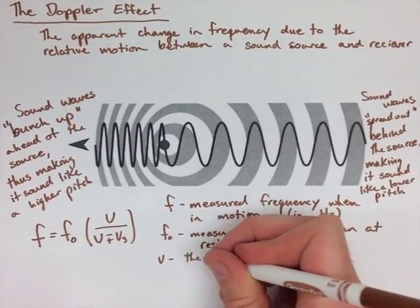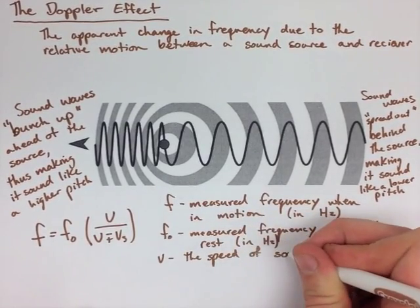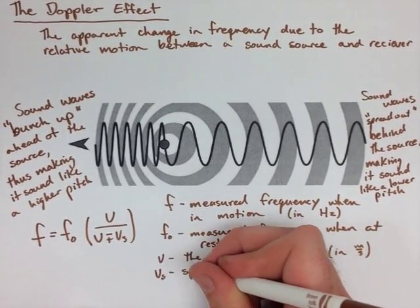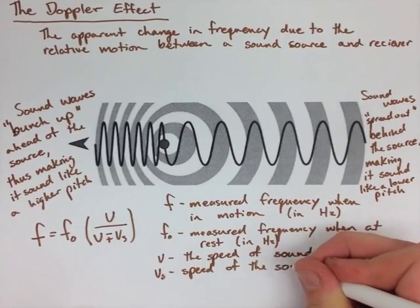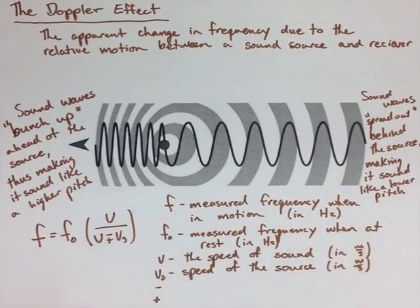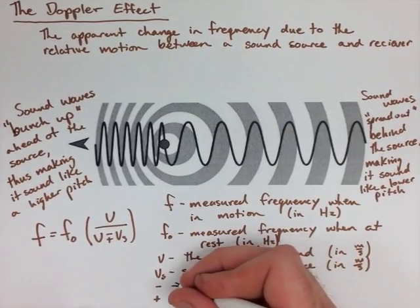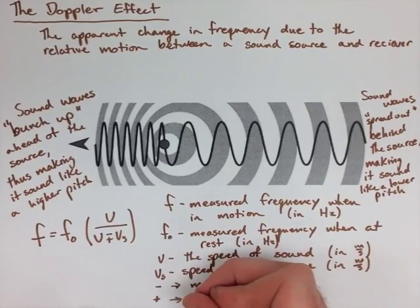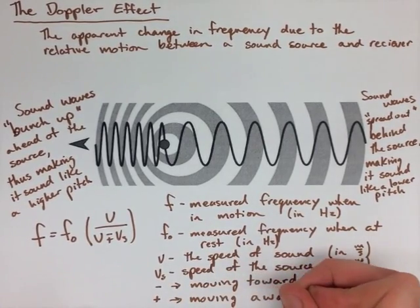On the bottom of our fraction, the minus sign would be used if the object was moving towards the observer, or the observer was moving towards the object. The positive sign would be moving away from each other, so either the observer is moving away or the object is moving away.